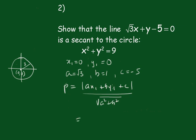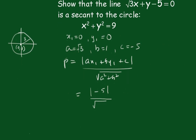Now, this is 0, this is 0, so we'll just have the absolute value of -5, all over the square root of root 3 squared, which is 3, and 1 squared, which is 1.